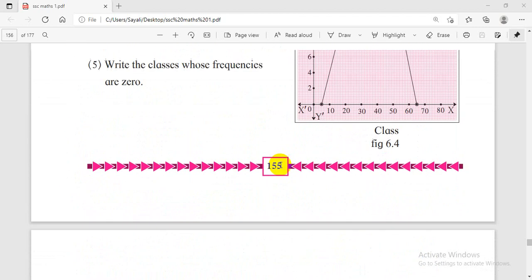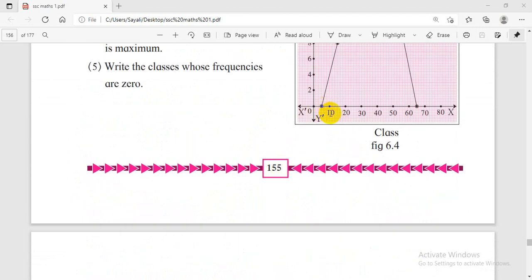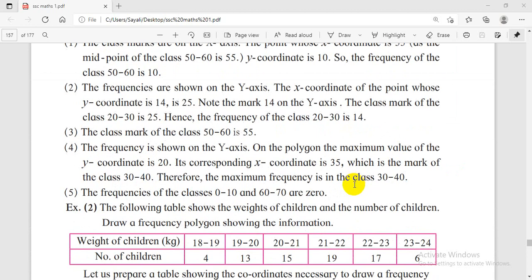Write the classes whose frequencies are 0. The class before the first class interval has frequency 0, which is 0 to 10. And the class after the last is 60 to 70. The frequencies of the classes 0 to 10 and 60 to 70 are 0.